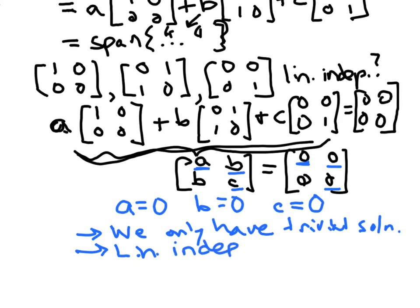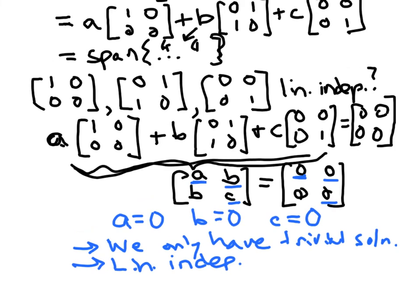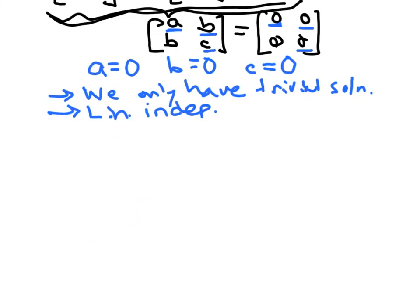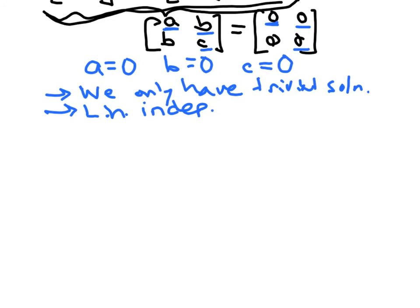Since now we know that those vectors are linearly independent, then we know that, well, I guess I'll write it. We know that this set of vectors,